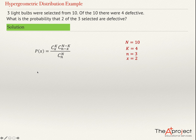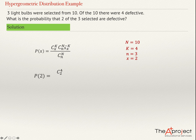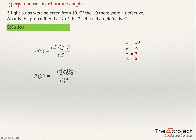So, the probability of 2 equals 4 choose 2, times 6 choose 1 — where 6 comes from 10 minus 4, and 1 comes from 3 minus 2 — all divided by 10 choose 3.